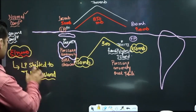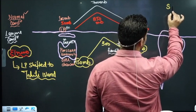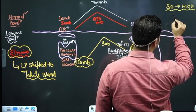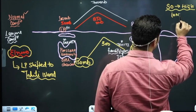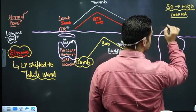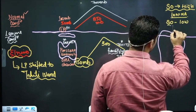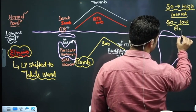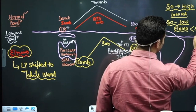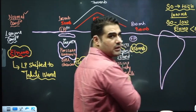So when I say Southern Oscillation is high, it means La Niña — good for the Indian Monsoon. When I say Southern Oscillation is low, it means El Niño. Together, we call El Niño and Southern Oscillation as ENSO — El Niño Southern Oscillation.